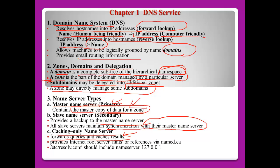The caching-only name server provides the internet root server hint. This hint file is normally named .ca. If you want to set up a caching-only name server, you can use etc/resolv.conf, and just include the name server localhost IP address.